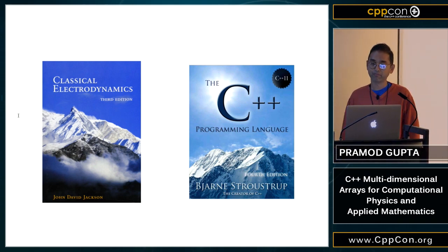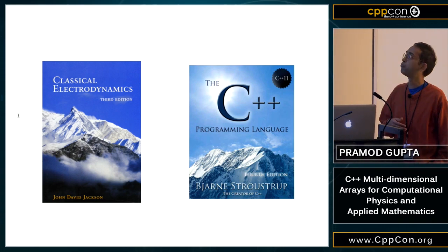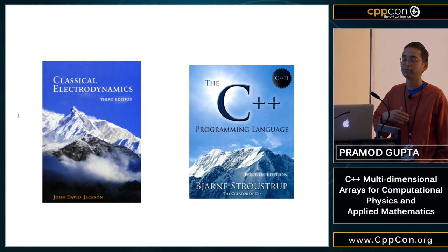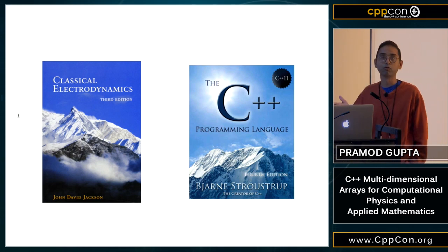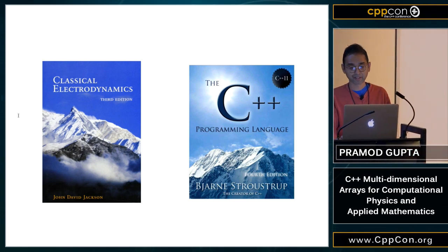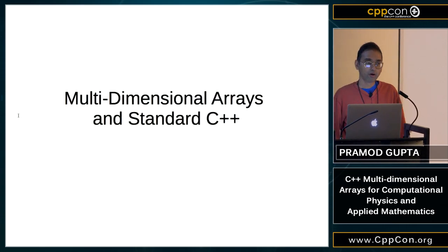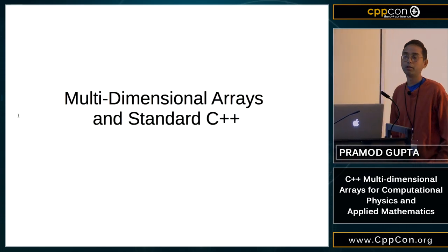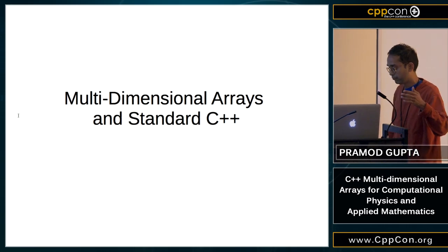Usually I'm climbing the mountain on the left-hand side, but sometimes I have to climb the mountain on the right-hand side. I don't know if book authors or publishers choose those front covers, but they are appropriate to the topic these books contain. So — multi-dimensional arrays in C++. What's the big deal?